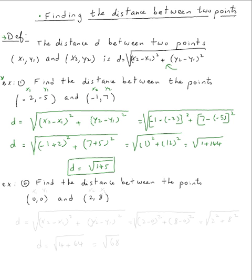Now let's do example two: find the distance between the points (0, 0) and (2, 8). The distance formula is the square root of (x2 minus x1) squared plus (y2 minus y1) squared. I'll call (0, 0) x1, y1 and (2, 8) x2, y2.